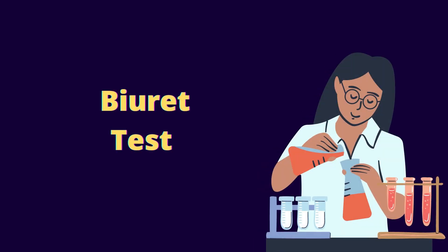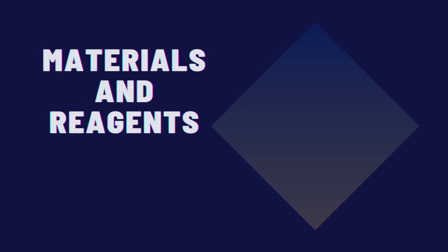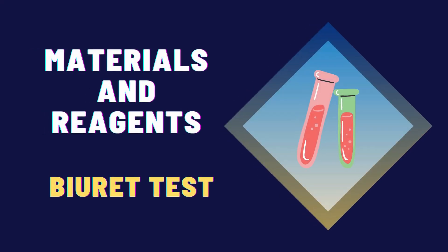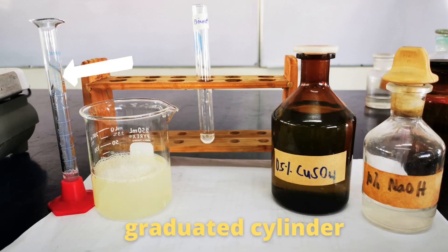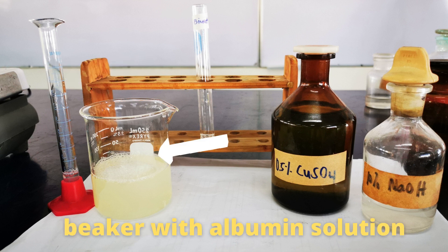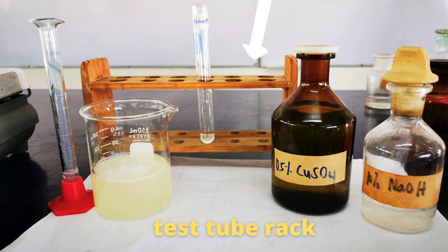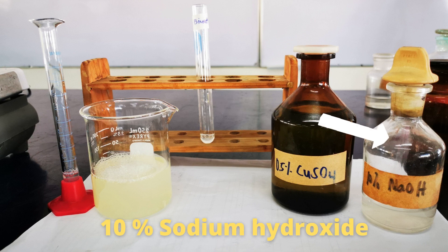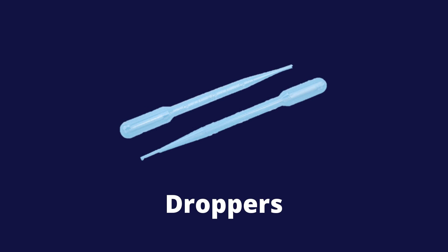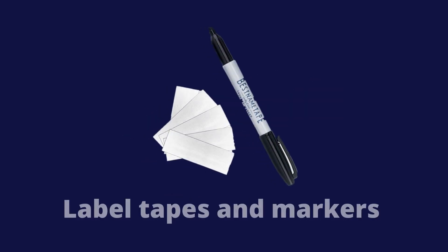Next, we have the biuret test. These are the materials and reagents for the biuret test: graduated cylinder, beaker with albumin solution, test tube, test tube rack, 0.5% copper sulfate, 10% sodium hydroxide, droppers, and label tapes and markers.